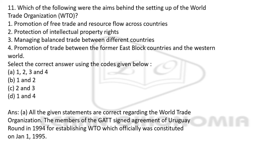Which of the following were the aims behind setting up the World Trade Organization? The WTO replaced what is known as GATT — the General Agreement on Tariffs and Trade — during the Uruguay Round of Conference in 1994, and officially WTO came into existence in 1995. The aims include: promotion of free trade and resource flow across countries; protection of intellectual property rights; managing balanced trade between nations; and promotion of trade between former East Bloc countries and the Western world.